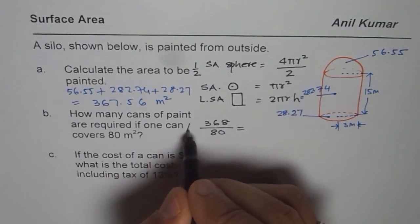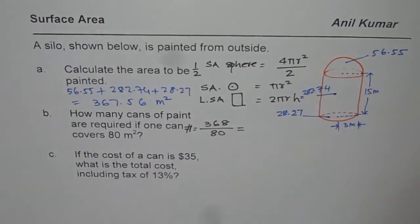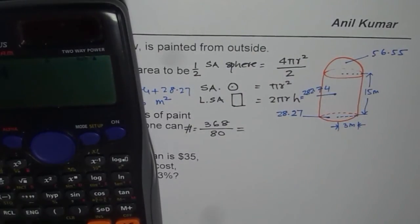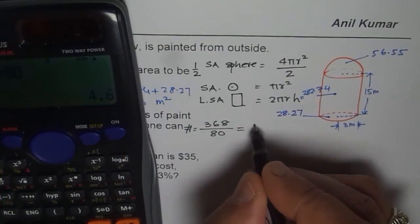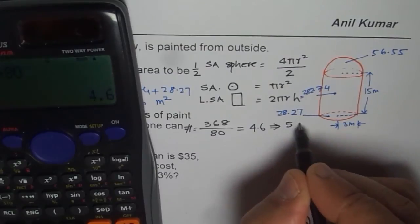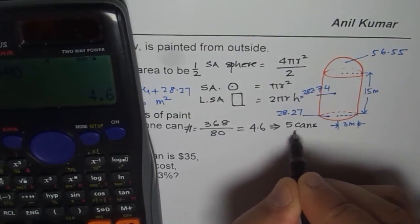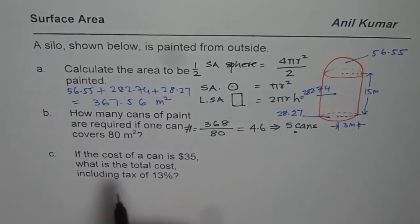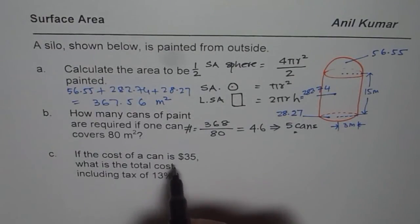That gives us 4.6. Now 4.6 means you have to buy 5 cans. You cannot buy half a can.